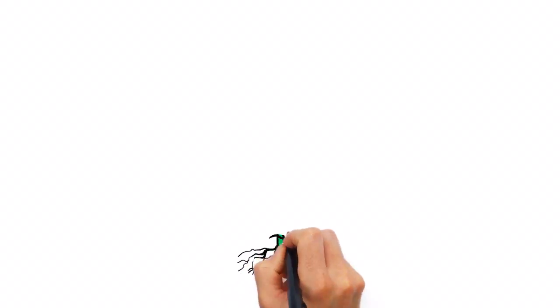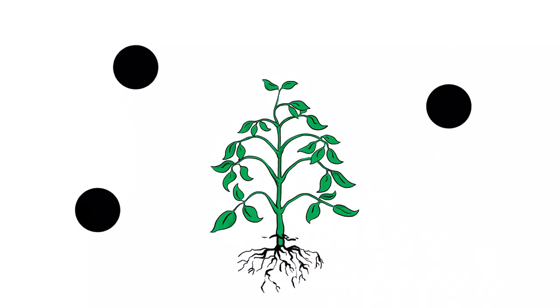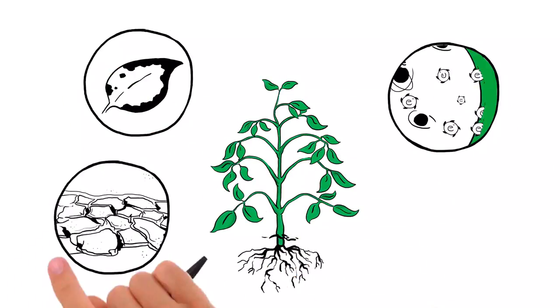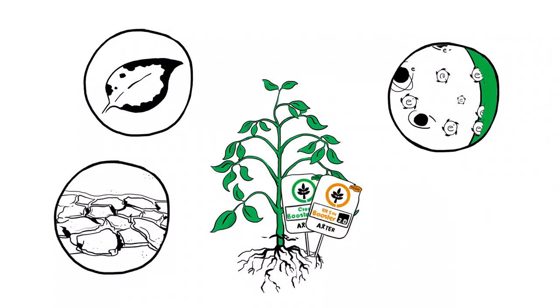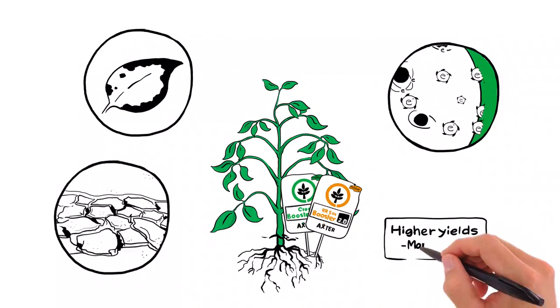By reducing the damage caused by free radicals and increasing resiliency to pests, disease, and environmental stresses, your crops can express their true potential. Higher yields, more often.